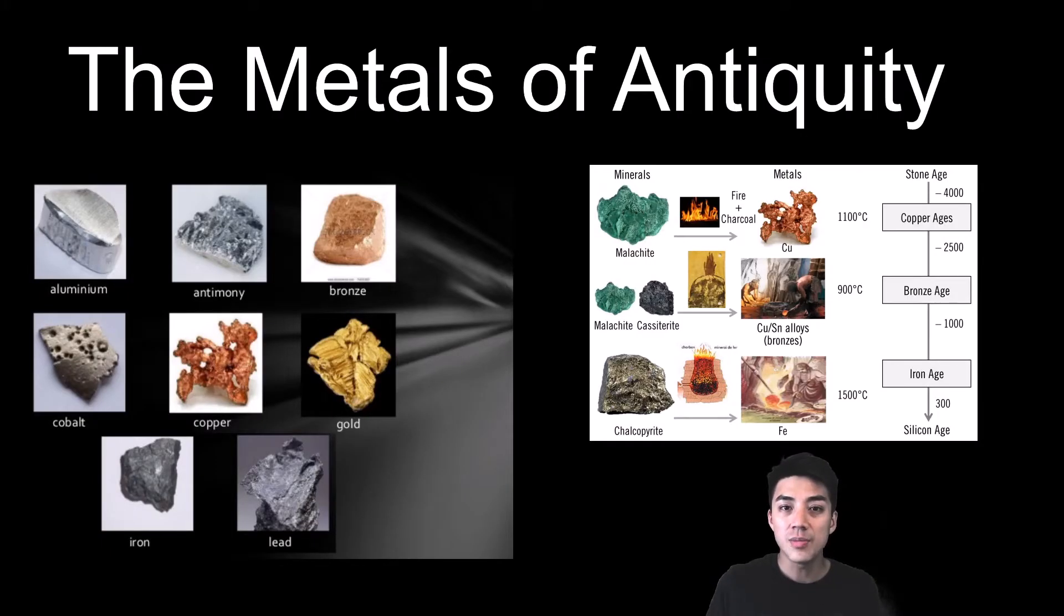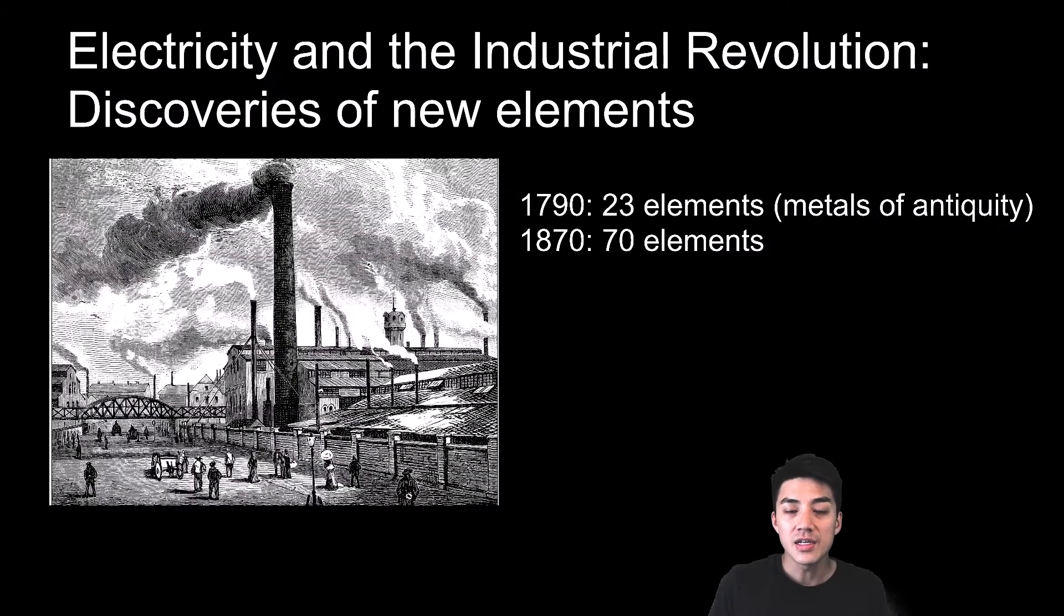Many civilizations knew about the metals of antiquity. These may have included silver and gold, which were found in their pure forms. Others were extracted from ores using fire and heat, and this led to the copper, the bronze, and the Iron Age. In 1790, there were only 23 known elements, and these included the metals of antiquity, things like carbon and oxygen.